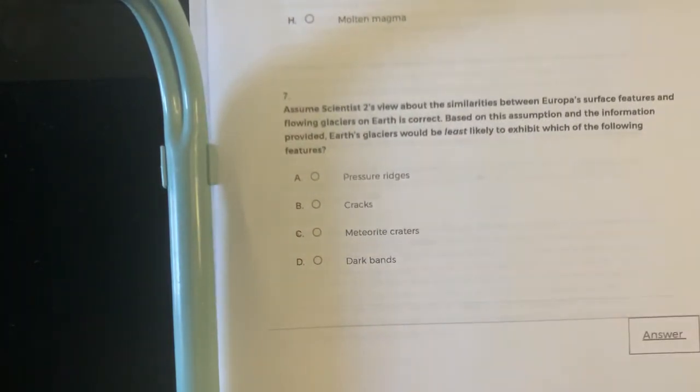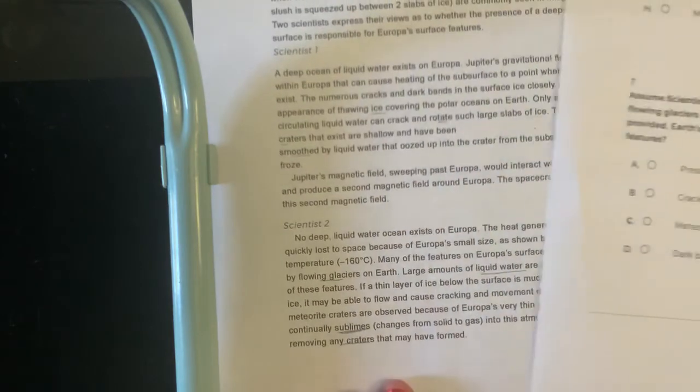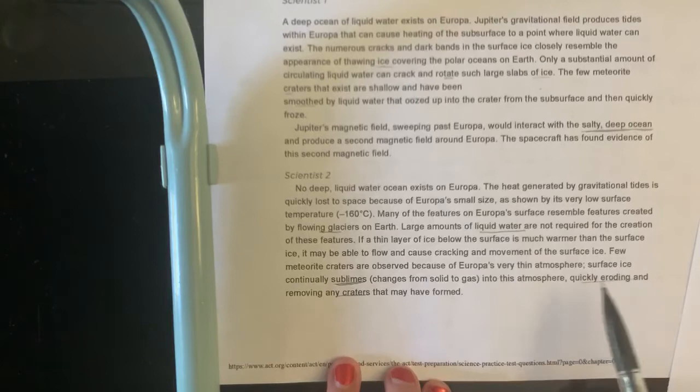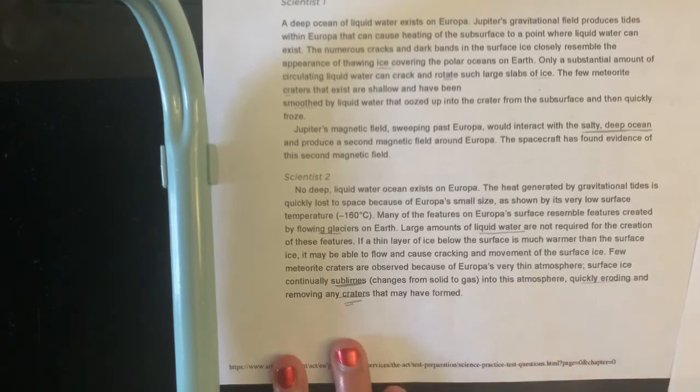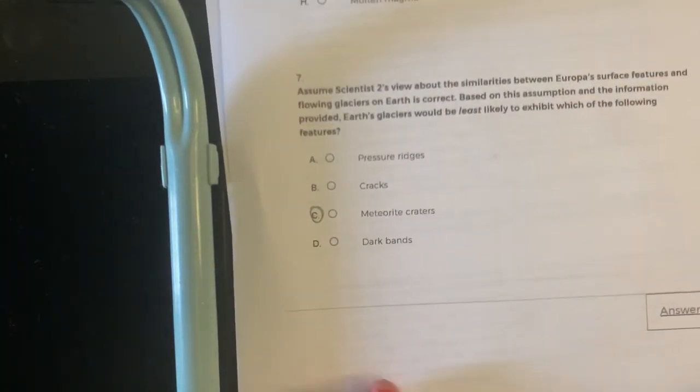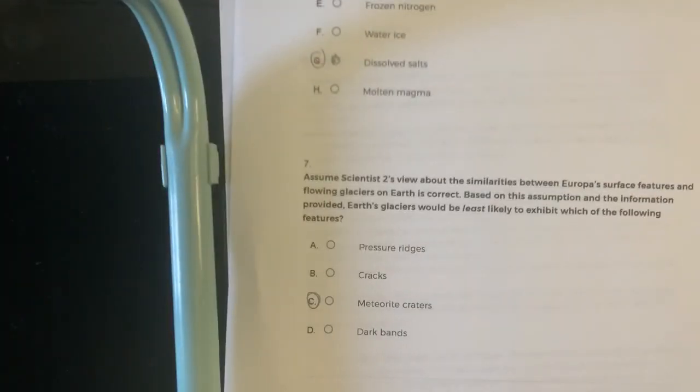Assume Scientist 2's view about the similarities between Europa's surface features and flowing glaciers on Earth is correct. Based on this assumption and the information provided, Earth's glaciers would be least likely to exhibit which of the following? Okay, so Scientist 2 is correct. So it says right here that it's quickly eroding and it removes any craters. So I do not think we would find any craters, as they're all being removed because we're assuming Scientist 2 is correct. Again, this is about 5 minutes and 40 seconds. I think you should take about 5 to 6 minutes per passage, so you're moving as efficiently as possible.